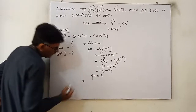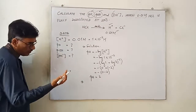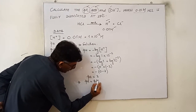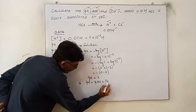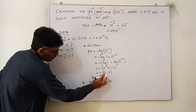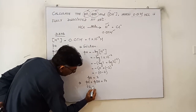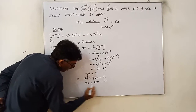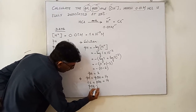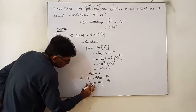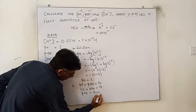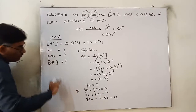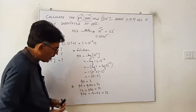Now we have the second aspect to determine, which is pOH. As we know, pH + pOH = 14. Since pH is 2, pOH = 14 - 2 = 12.